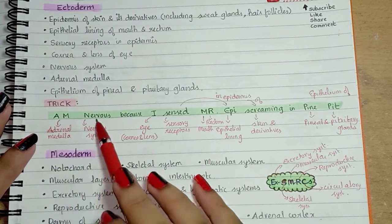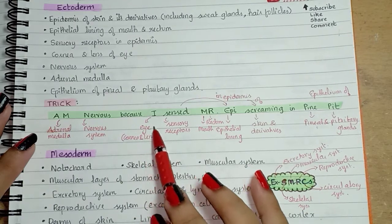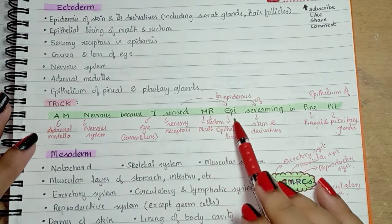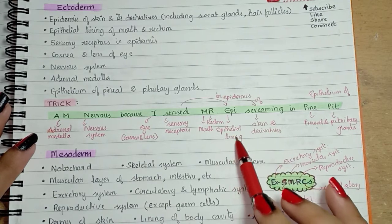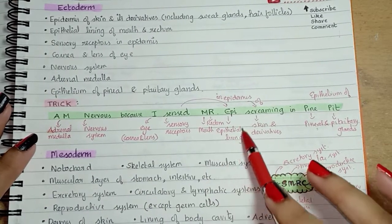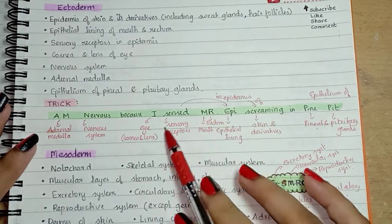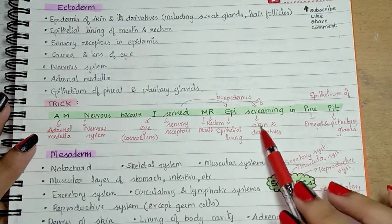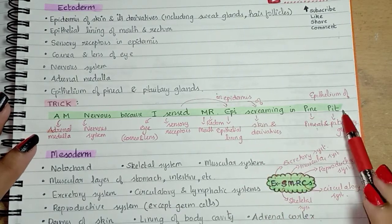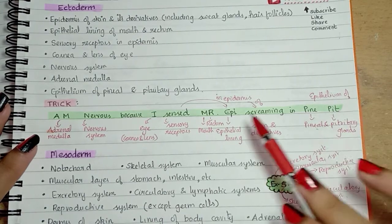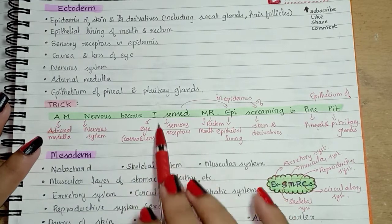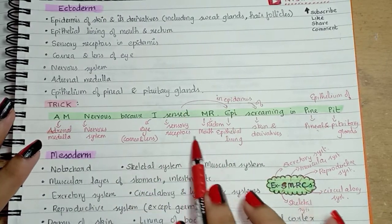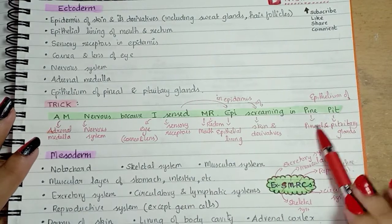Breaking down the ectoderm mnemonic: 'am' means adrenal medulla; 'nervous' means nervous system; 'I' stands for eye — that is cornea and lens of eye; 'sensed' for sensory receptors; 'Mr.' for mouth and rectum; 'Epi' for epithelial lining of mouth and rectum; 'screaming' means skin and derivatives — epidermis of skin and derivatives; and 'pine pit' for pineal and pituitary glands — epithelium of pineal and pituitary glands. After 'eye', everything consists of 'epi' words meaning epithelium.